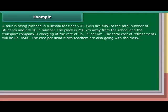Example: A tour is being planned in a school for class 8. Girls are 40% of the total number of students and are 18 in number. The place is 250 km away from the school and the transport company is charging at the rate of Rs. 15 per km. The total cost of the refreshments will be Rs. 4,500. Find the cost per head if two teachers are also going with the class.